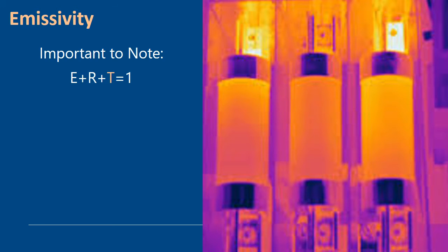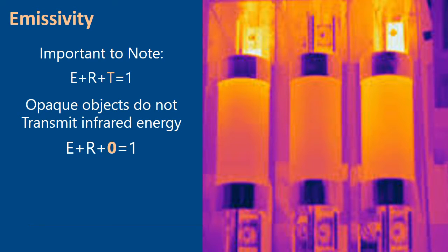When we look at different materials, opaque objects do not transmit infrared energy. So basically we can look at the emitted and reflected energy plus T which will equal zero transmission. Infrared windows transmit infrared energy but opaque objects don't. The infrared energy does not transmit through them.